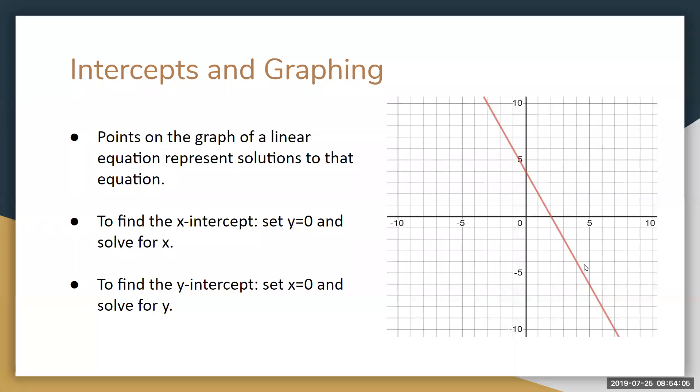Similarly, for the y-intercept, that's the place where the line crosses the y-axis. You can see from this graph the y-intercept seems to be 4. So we can say the y-intercept is 4 or the point (0,4).